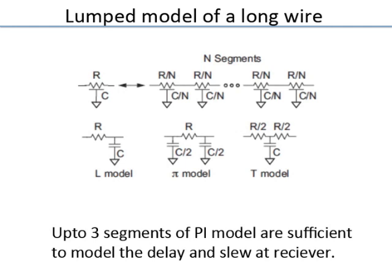When doing circuit analysis, a wire is a distributed entity, unlike a transistor which can be modeled as a lumped element. Incidentally, even for transistors operating at very high speeds — RF or frequencies on the order of the carrier transit time — the lumped model no longer works.